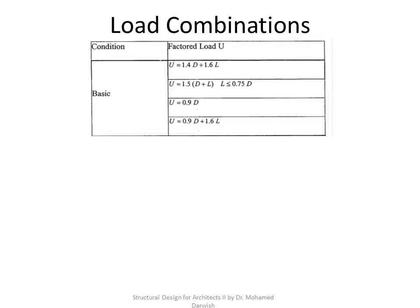When combining loads, the basic or principal load combination is combining dead and live. If they are different in magnitude, we use 1.4 dead plus 1.6 live. However, if they are near to each other in value, you use 1.5 dead plus live.